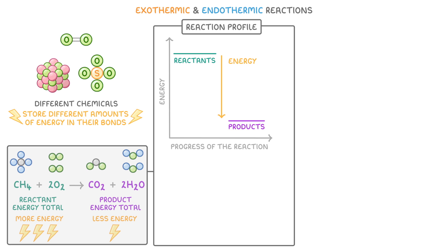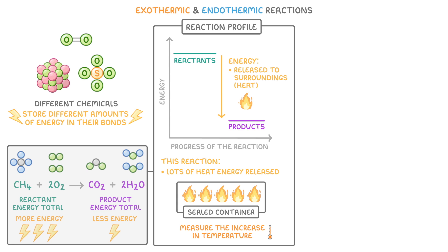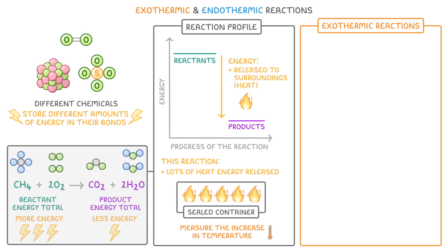Now if the chemicals in the reaction have lost this much energy, then this much energy must have been released to the surroundings — because remember, energy can't be created or destroyed, it can only be transferred from one place to another. The most common way to exchange energy with the surroundings is in the form of heat. We call reactions like this exothermic, and what all exothermic reactions have in common is that they transfer energy to the surroundings, usually in the form of heat.